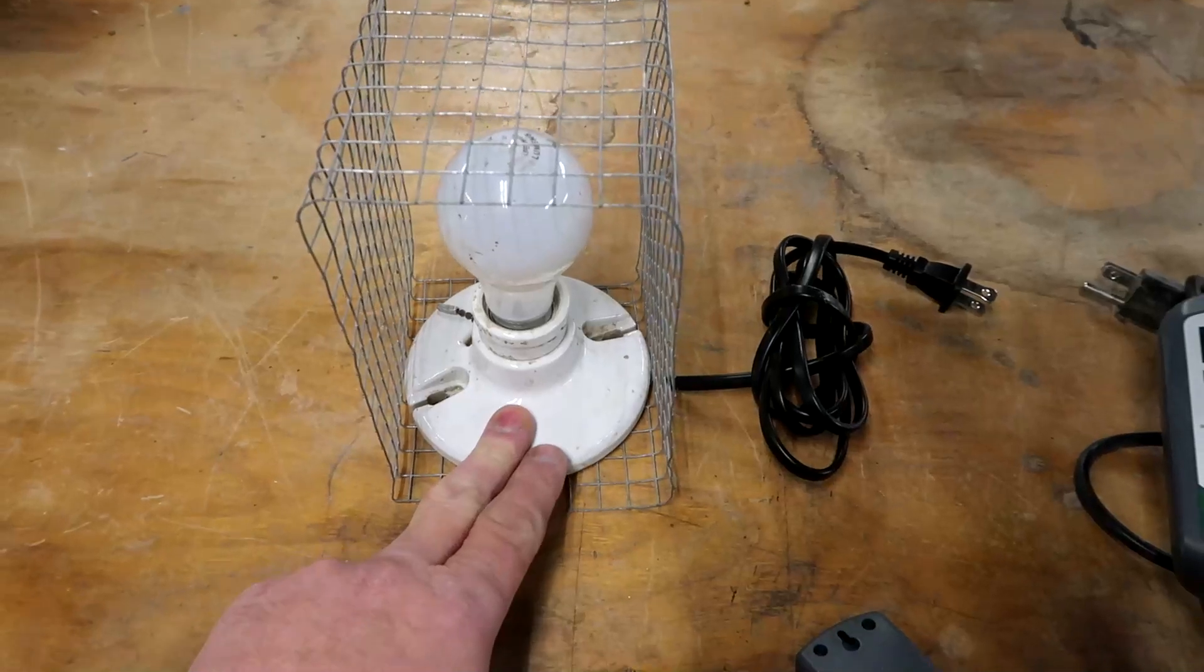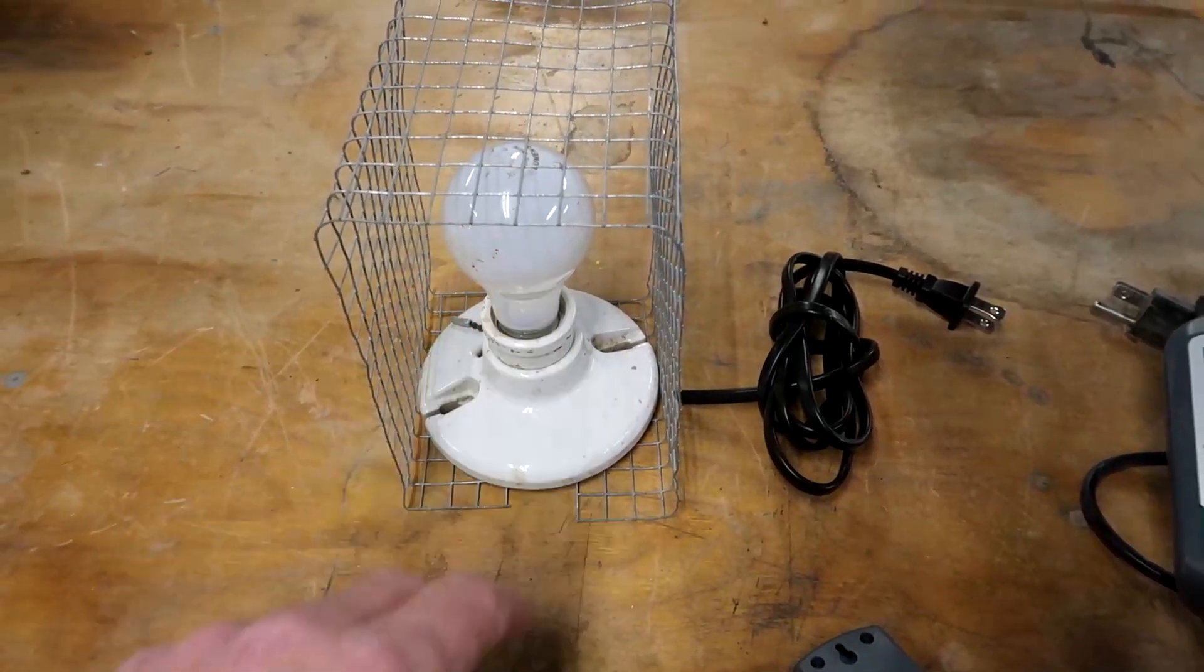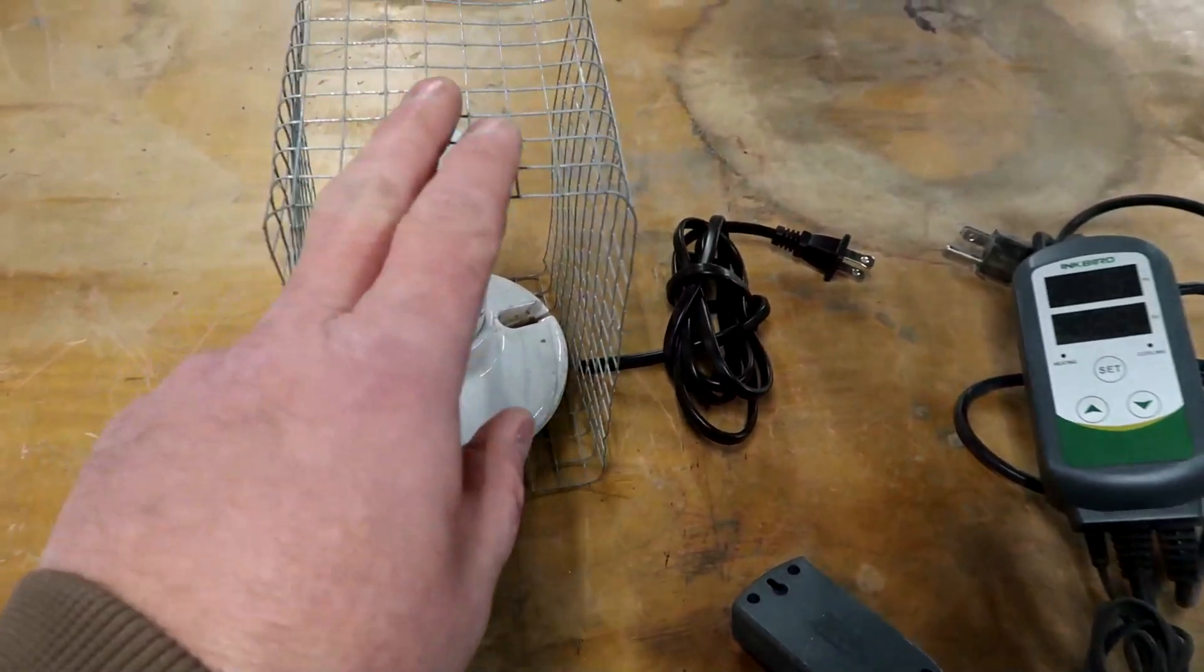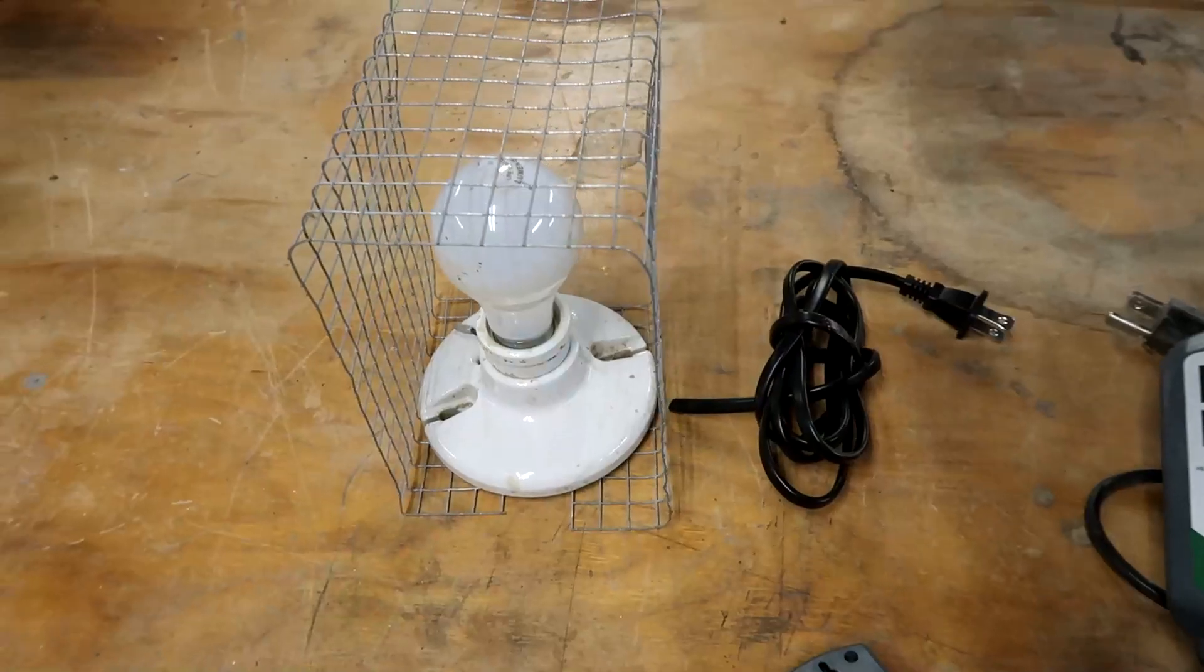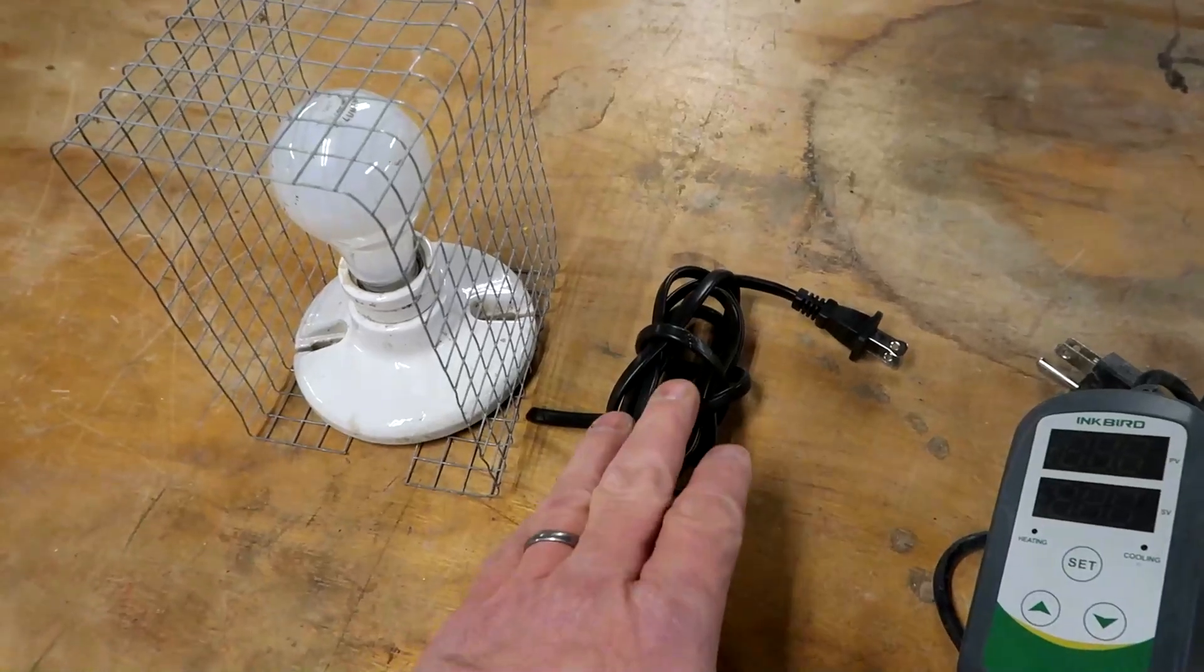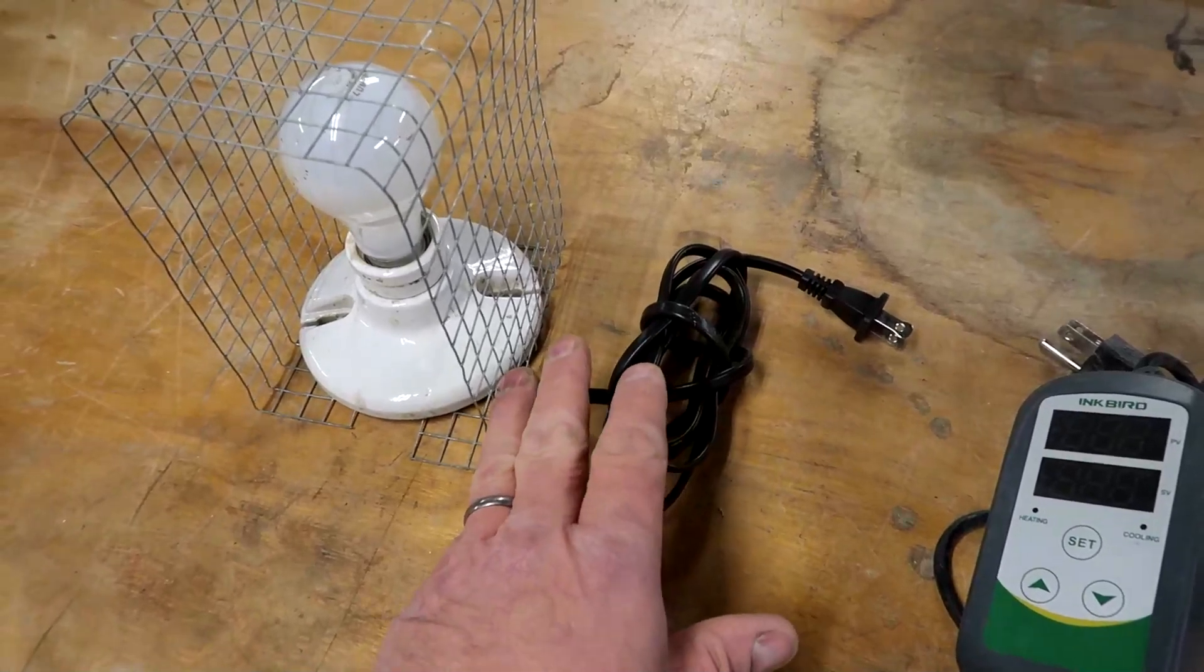I've got a light bulb fixture, an incandescent 100 watt bulb. I've got a little cage that I made out of hardware cloth. That's just to keep the jars from hitting the bulb and breaking it. I have an old appliance cord that I'm going to hook up to the light.